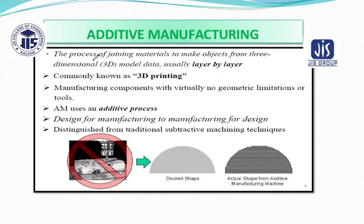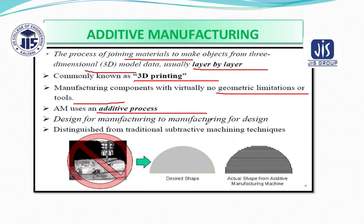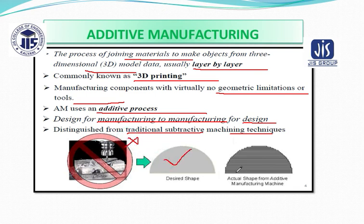Basically, the process of joining materials makes an object 3D, and it is usually performed layer by layer, so it is commonly known as 3D printing — manufacturing components with virtually no geometrical limitations or tooling. Additive manufacturing is used as an additive process and is distinguished from traditional subtractive machining techniques. In additive manufacturing, no removal of material occurs; instead, deposition of material occurs layer by layer to get the desired shape.